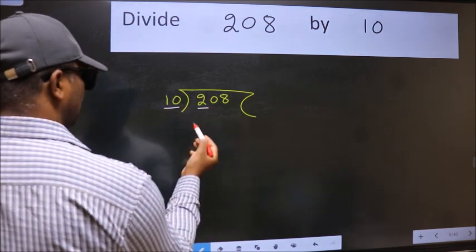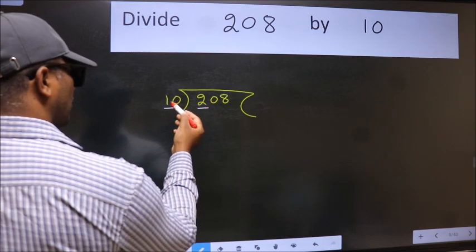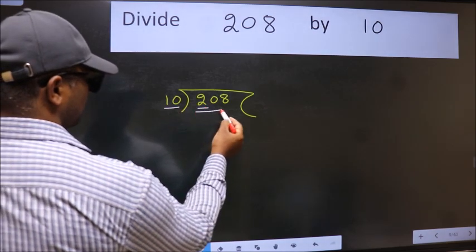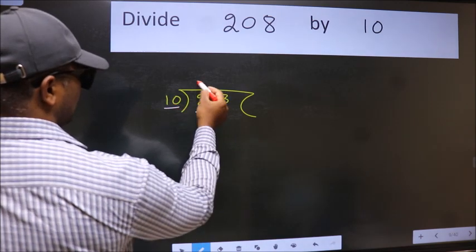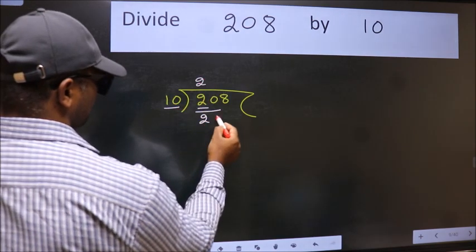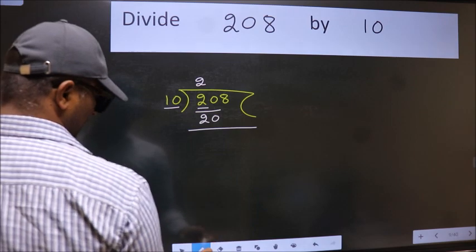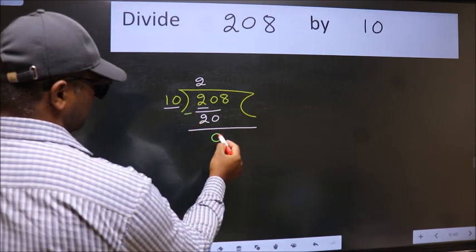208 and here 10. 2 is smaller than 10, so take two numbers: 20. When do we get 20 in the 10 table? 10 times 2 is 20. Now we subtract and get 0.